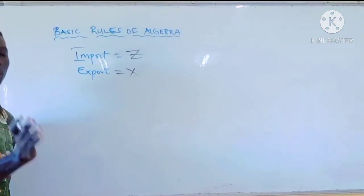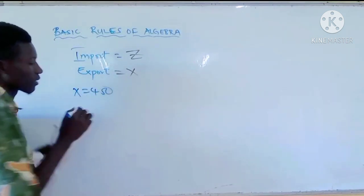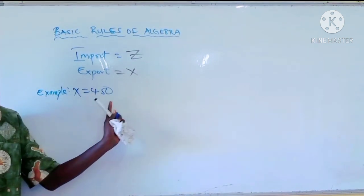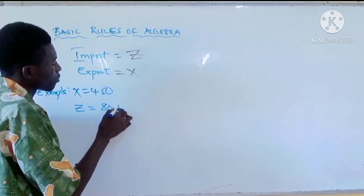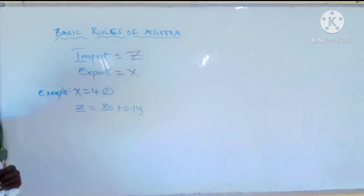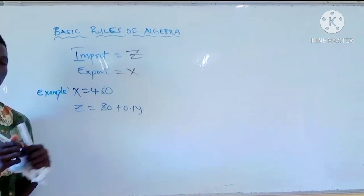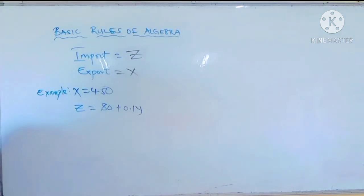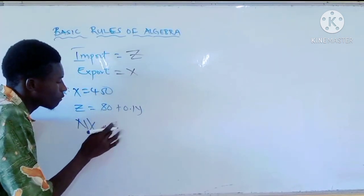The first question: in an economy, if the export is 450 and the import is 80 plus 0.1Y, we need to find an expression for net export in terms of Y. That means net export must be the subject of the formula and Y should be the variable inside the formula.